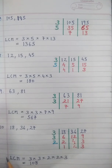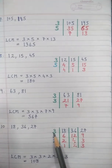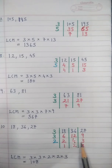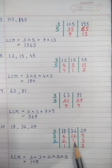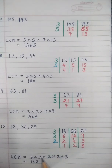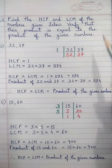Sum 10: 18, 36, and 27. Factorize by 3: 3 sixes are 18, 3 twelves are 36, 3 nines are 27. Again divisible by 3: 3 twos are 6, 3 fours are 12, 3 threes are 9. Then 2 and 4 are divisible by 2: 2 ones are 2, 2 twos are 4, and 3 is brought down. LCM = 3 into 3 into 3 into 2 into 2 into 3 = 108.